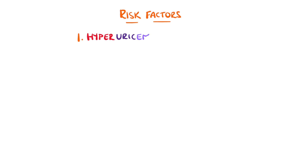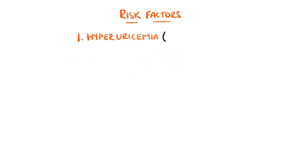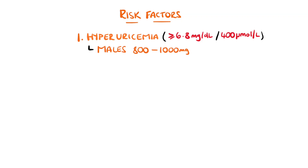Hyperuricemia is an excess of uric acid in the blood, and is a key factor and the leading cause of gout. Levels above 7 mg per deciliter are considered saturated, which gives the risk of developing symptoms. In males, there is an 800 to 1000 mg pool of urate, while in females this pool is between 500 and 1000 mg.